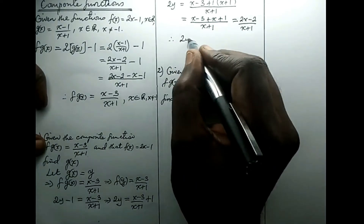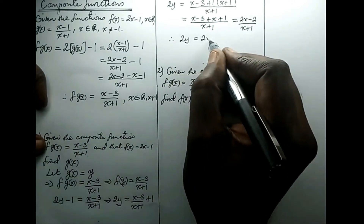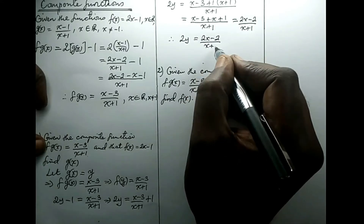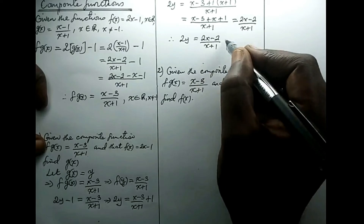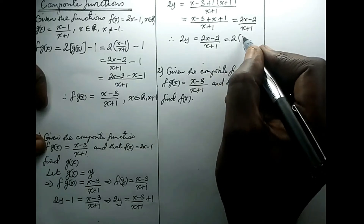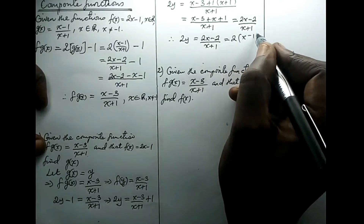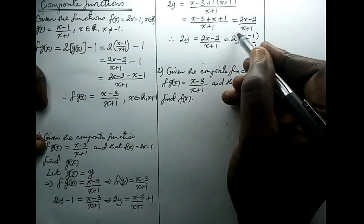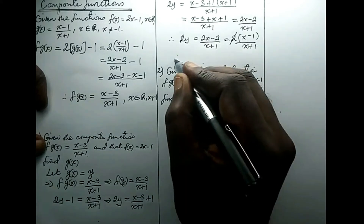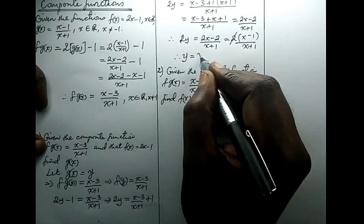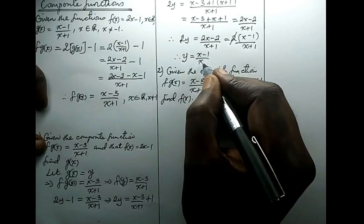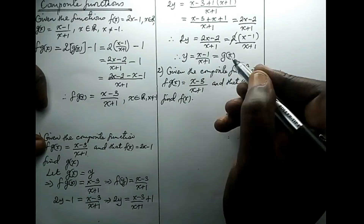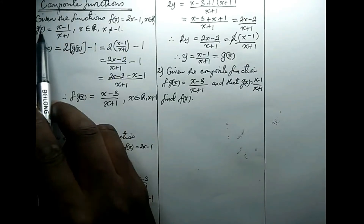Therefore 2y equals 2x minus 2 all over x plus 1. The 2s cancel on both sides and we see that y equals x minus 1 all over x plus 1, which is equal to g of x. That's the original function that we started with.